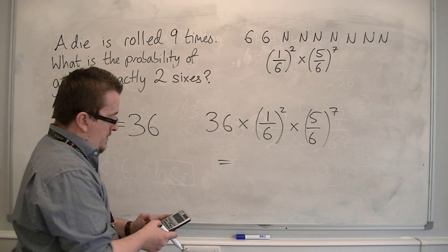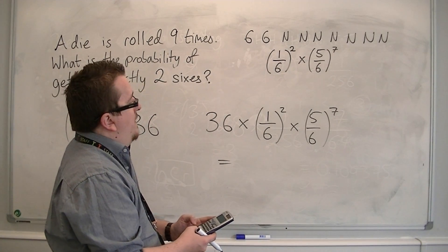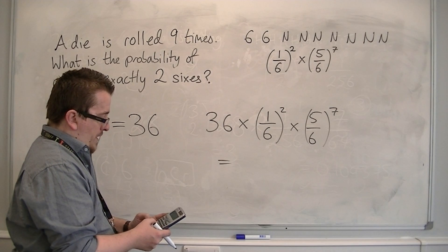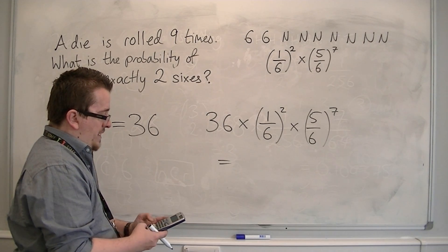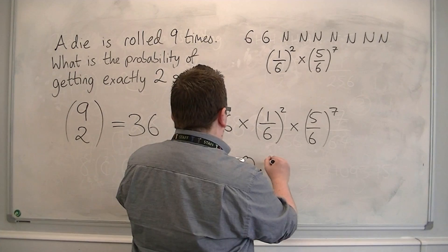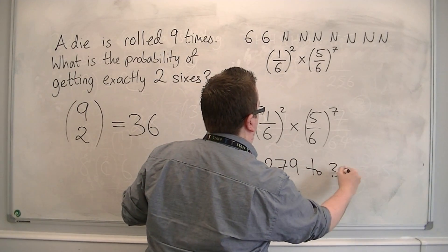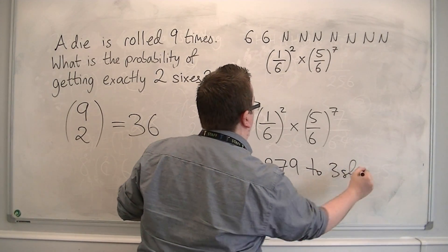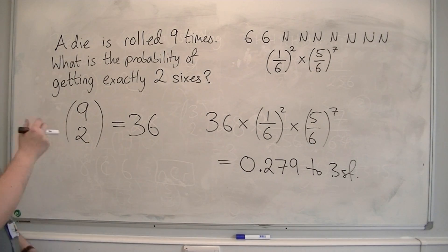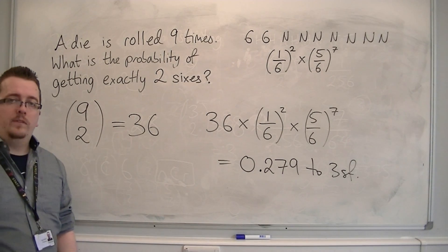So I plug that into the calculator: 36 times one over six squared, then times five-sixths to the power of seven, and that gets me 0.279 to three significant figures. And that's how we can deal with unequal probabilities like this.